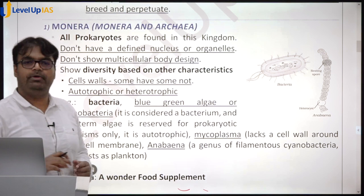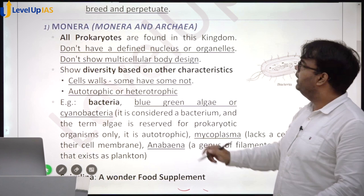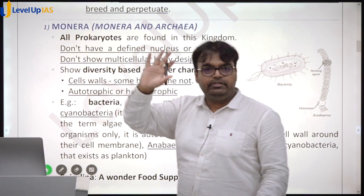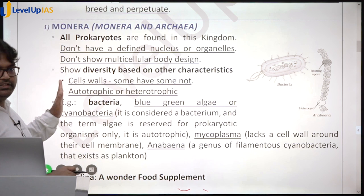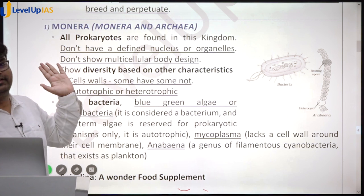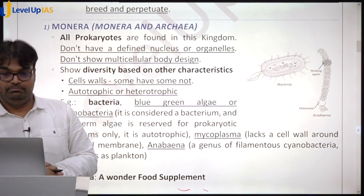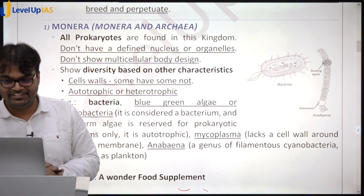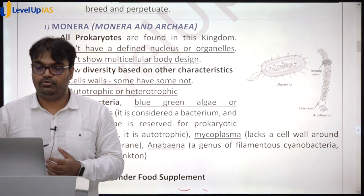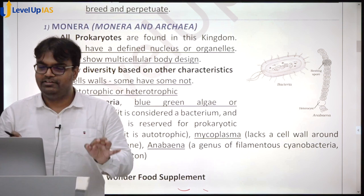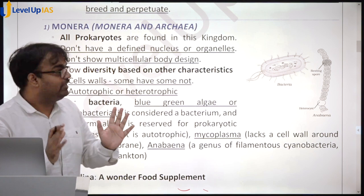Let us look at each kingdom in more detail, starting with Monera. Since I am using the five-kingdom method, when I say Monera I am including both Monera and Archaea from the seven-kingdom classification. All prokaryotes are in the Monera kingdom — there is no exception. If you are a prokaryote you are in Monera. If you are a prokaryote you will not be multicellular; prokaryotes are always unicellular.